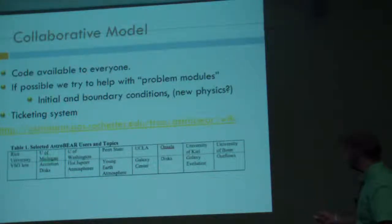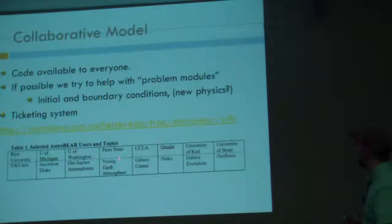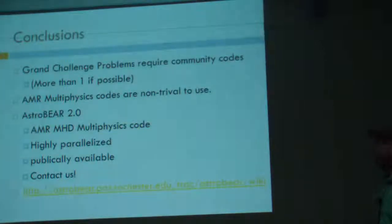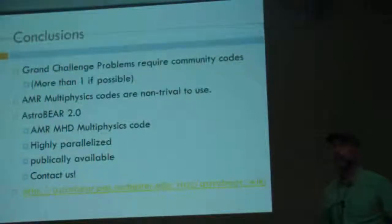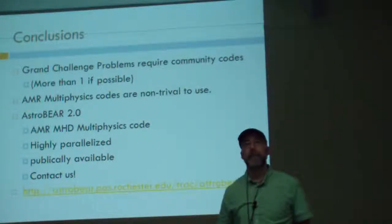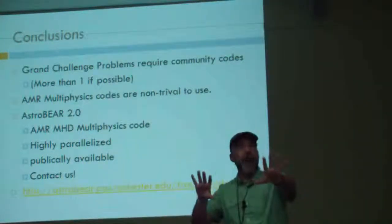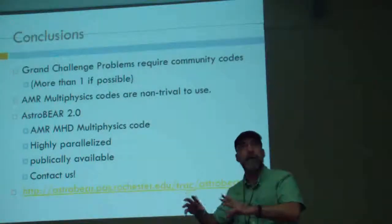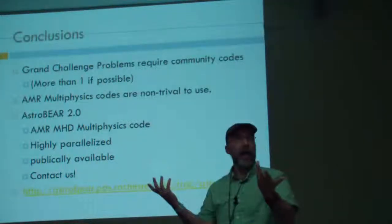This is a partial list of collaborators: Rice University, University of Michigan, University of Washington. We're doing everything from YSO jets to hot Jupiter atmospheres, the galactic center — Mark Morris has picked it up — and young stellar atmospheres. This has proven to be a fairly robust collaborative model. AstroBear is really designed for hardcore simulations with lots of physics, and we'll probably need MESA stellar evolution data in order to initialize our grids.